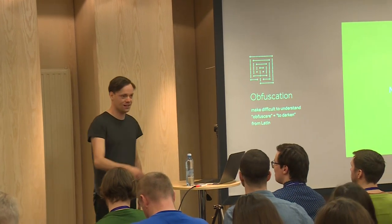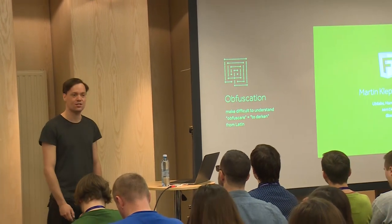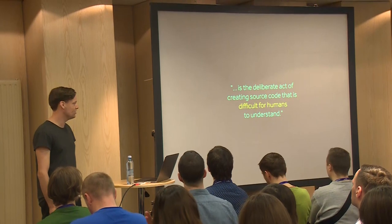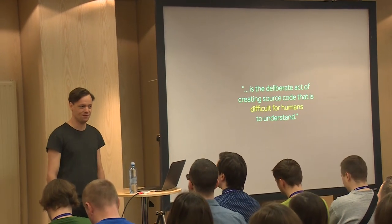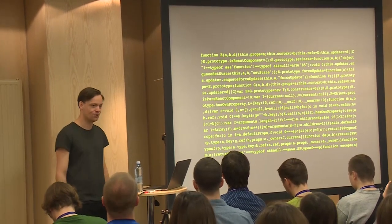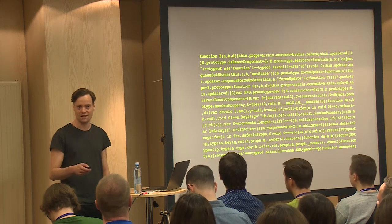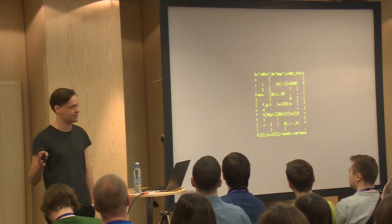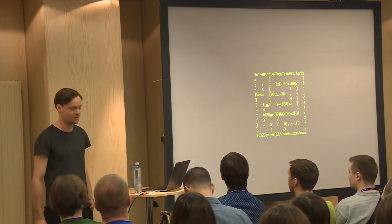I'm going to talk about obfuscation in this talk. You might have heard about this - it's a common topic, and it concerns making source code that's difficult to understand. In JavaScript, this is usually done by using a minifier, and you will have the minified code or part of the minified code. But in this case, I'm not talking about automatic obfuscation - it's about obfuscation done by hand. I'm going to show a couple of different examples of how you can shift characters by hand to have source code that is somewhat beautiful and somewhat unexpected in design.